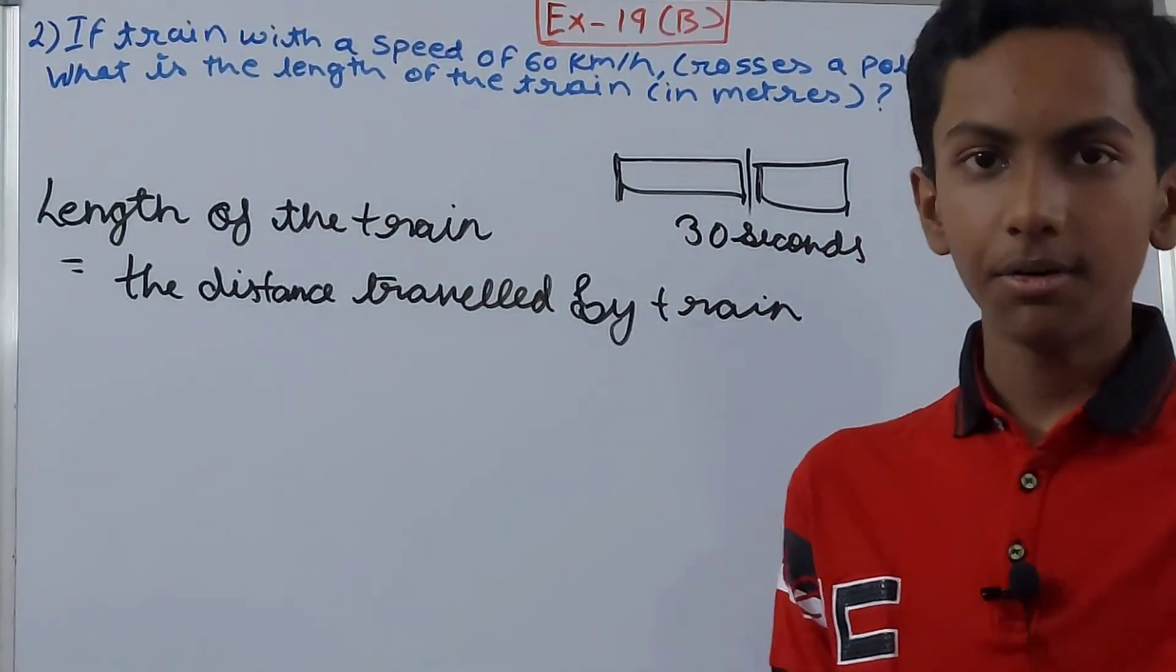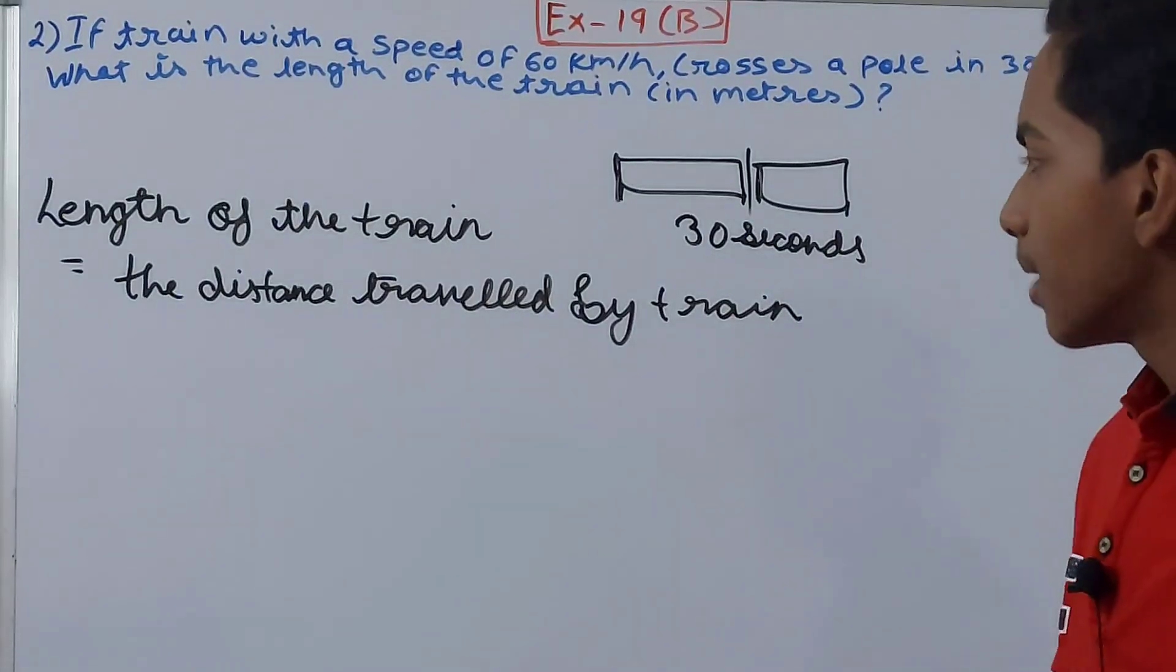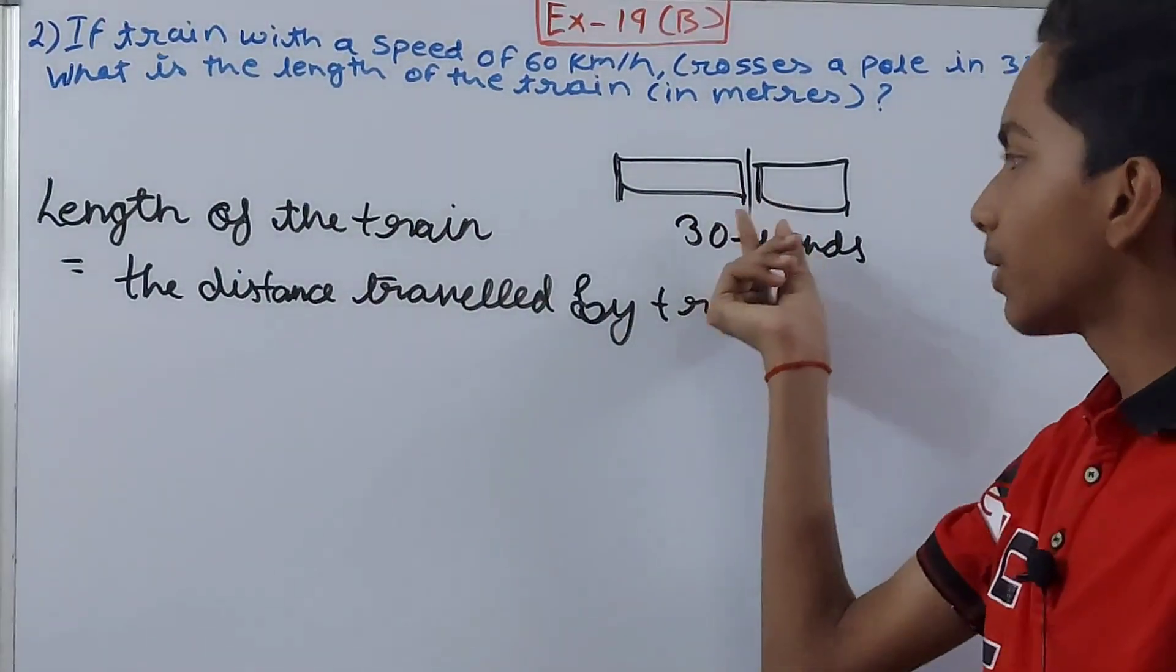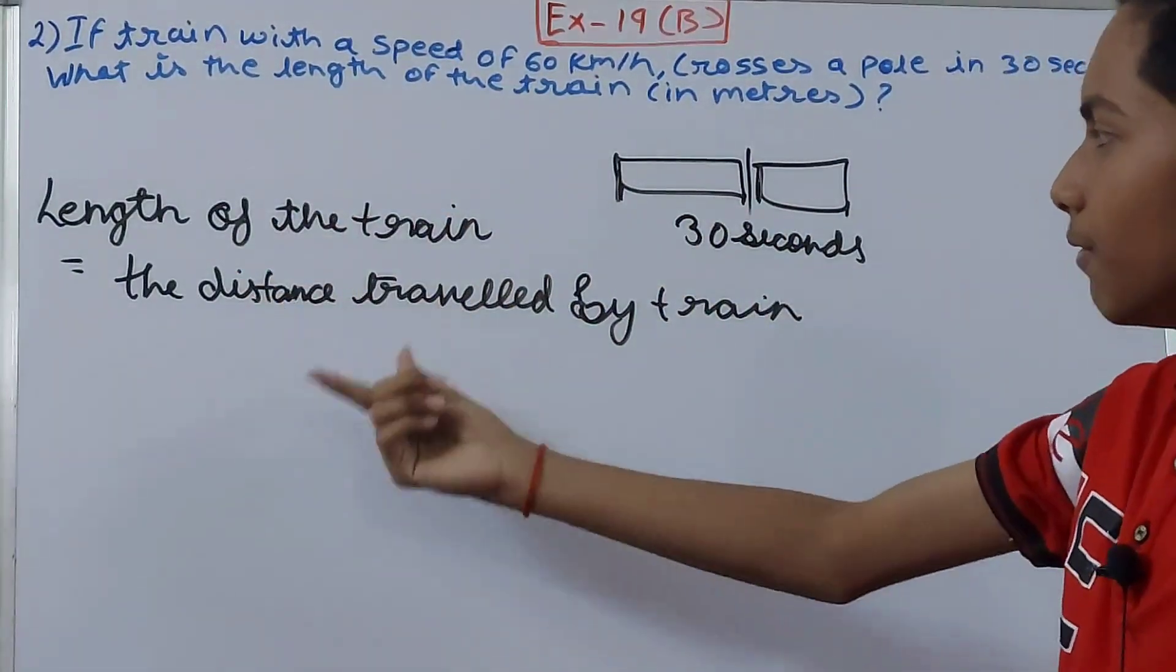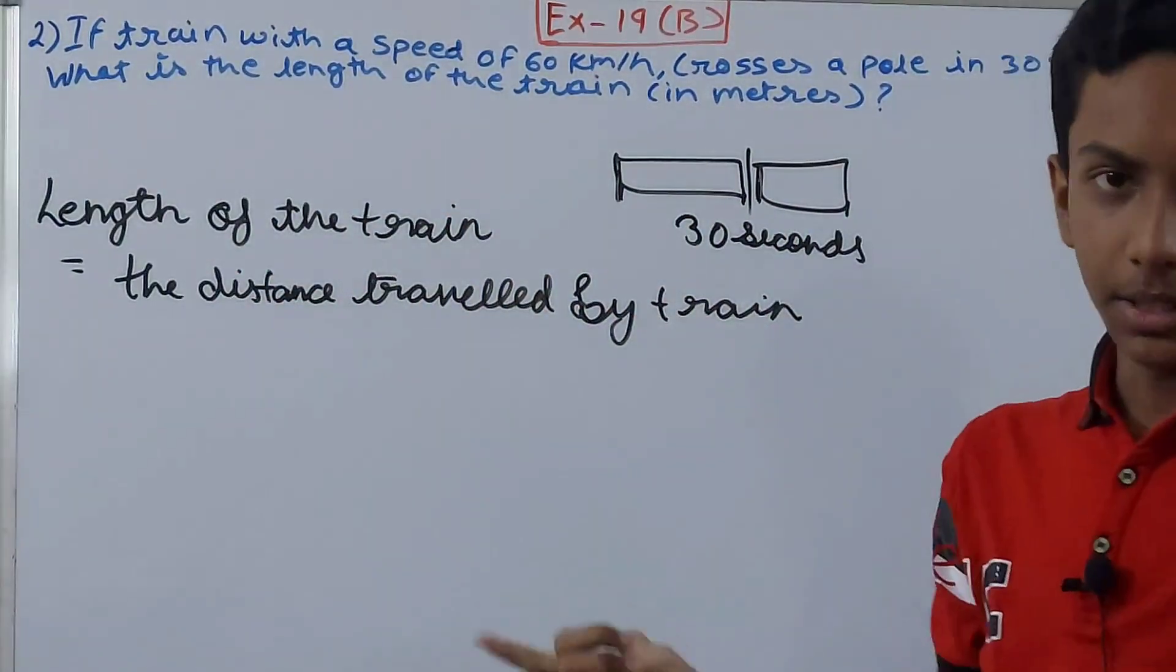But if the train is crossing some bridge or something else like that, then we have a different method for that. That we will see in the upcoming videos. But for now just know this: if the train is crossing a pole, the length of the train will be the distance traveled by it.